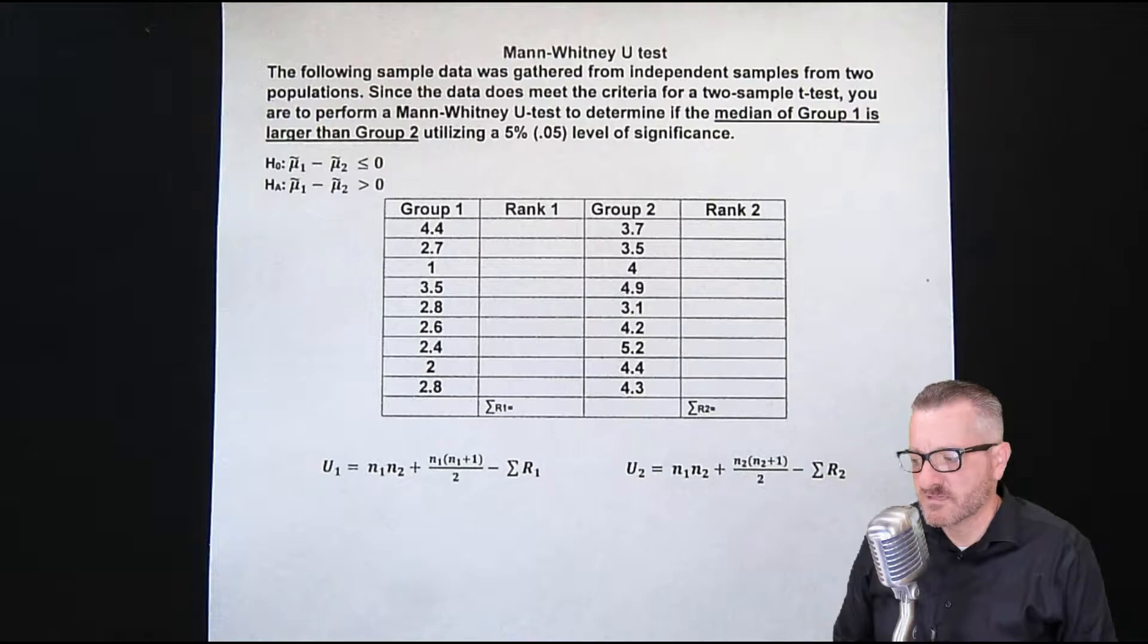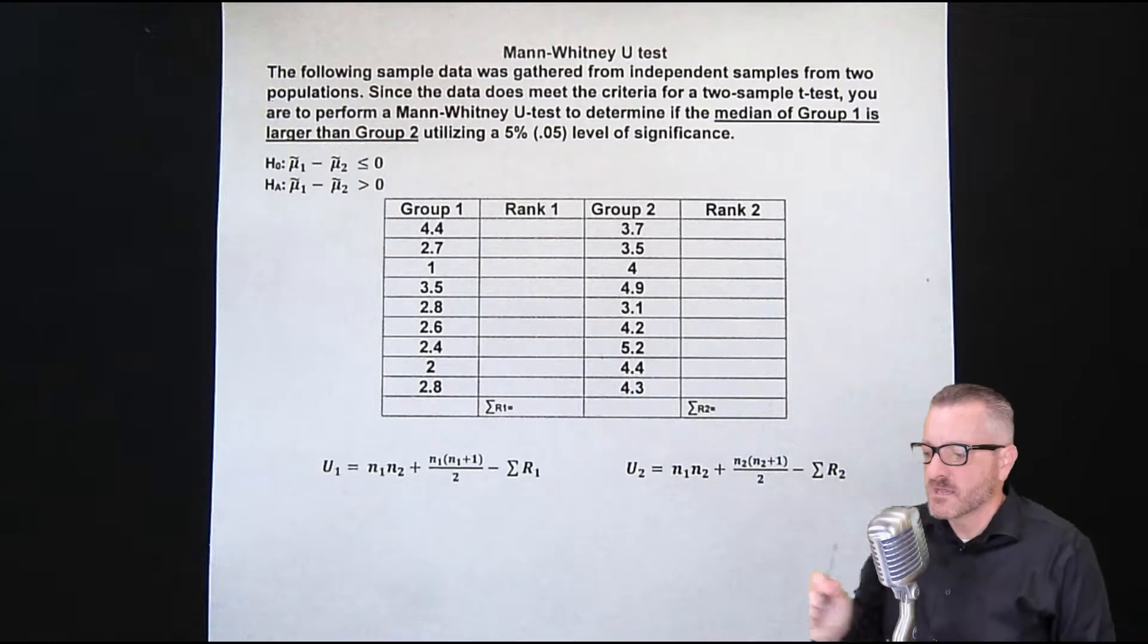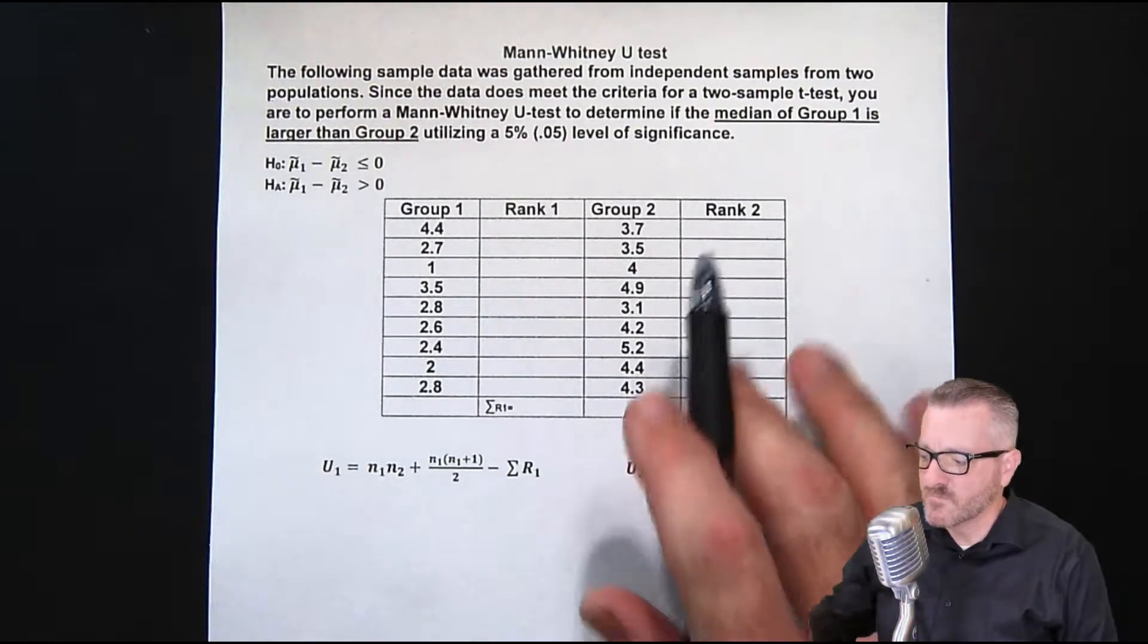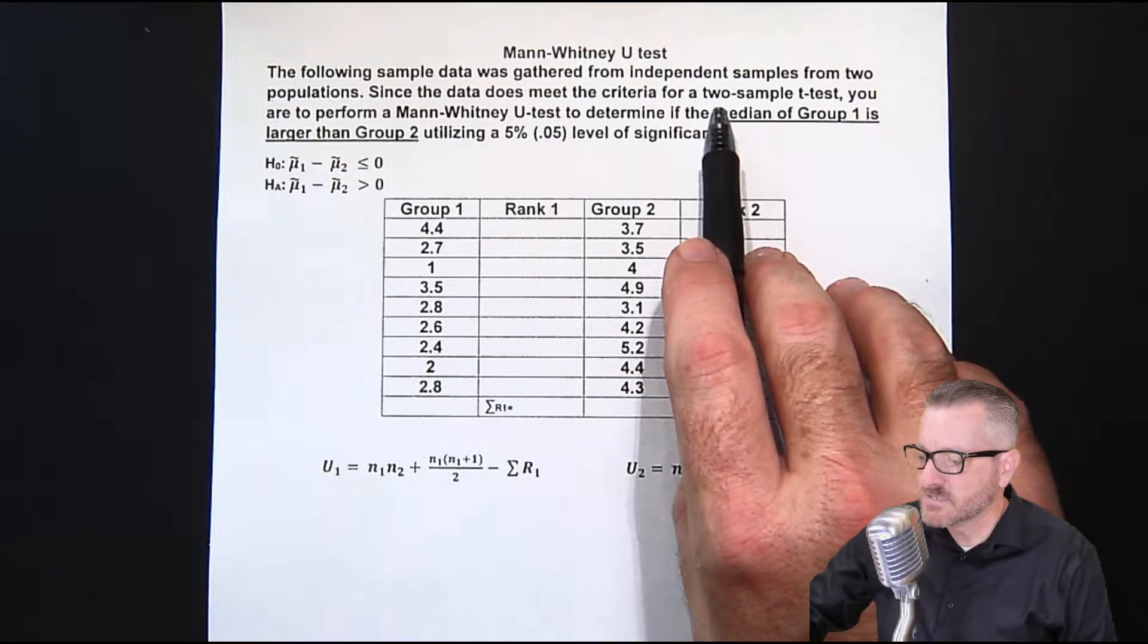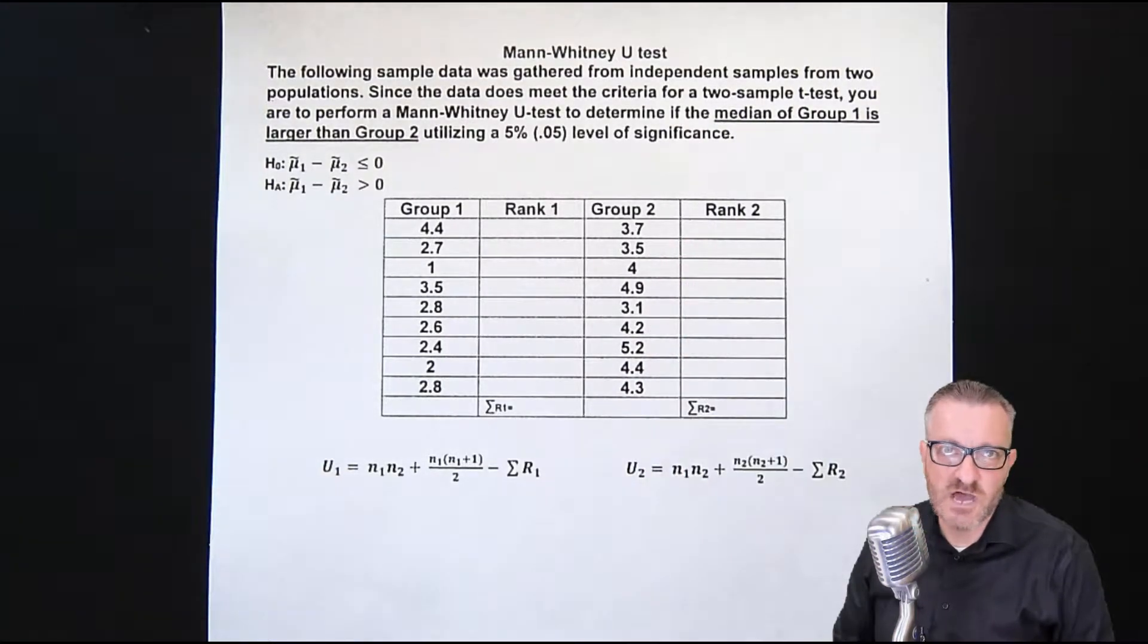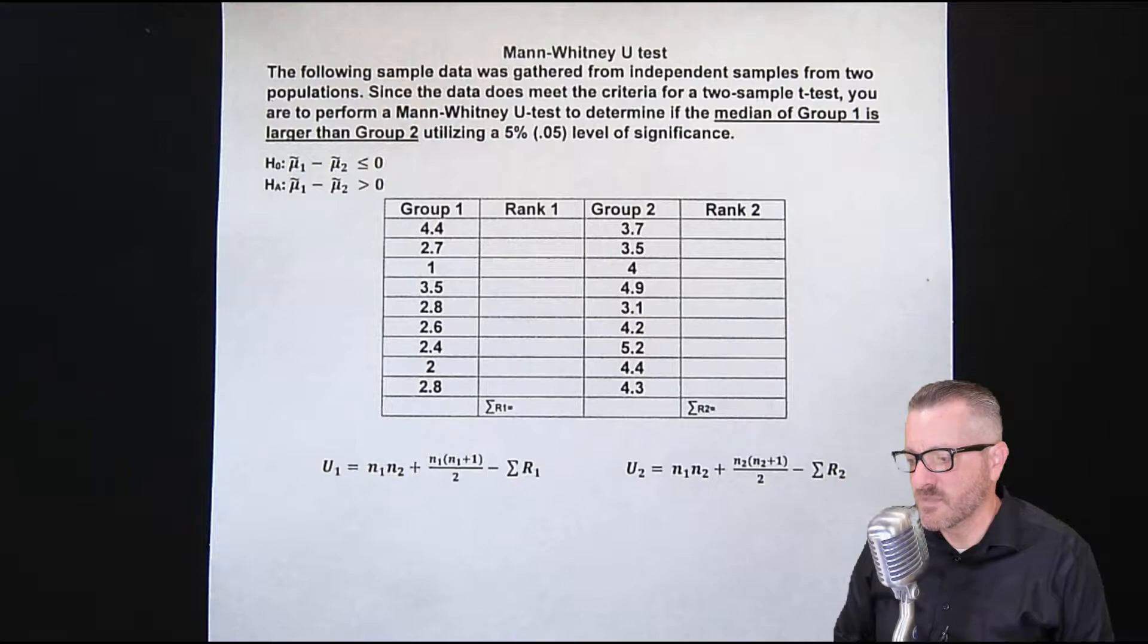The other thing is, usually we do these tests if our data does not meet the characteristics of a typical statistical-based test, and that's why we're doing this one. So normally we would be able to use this data and use the two sample t-test, but in this case we're not, so we're using the Mann-Whitney U test.